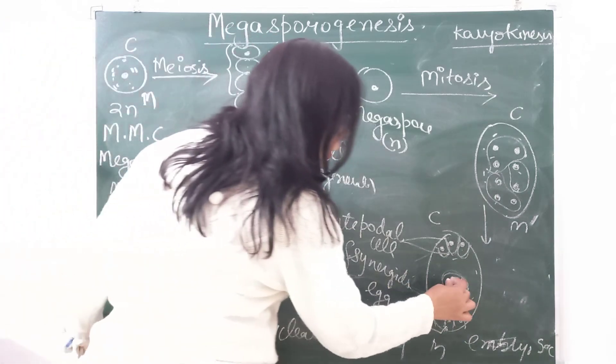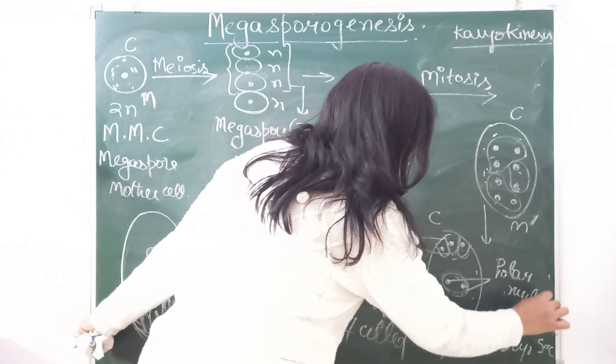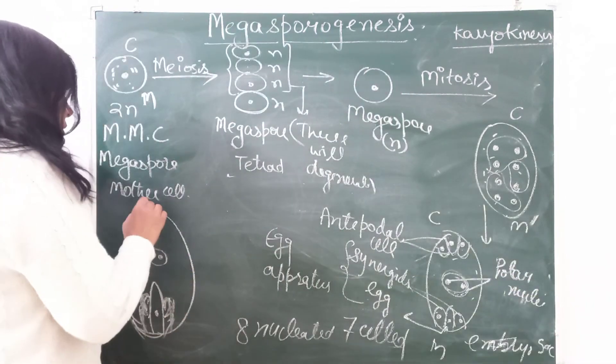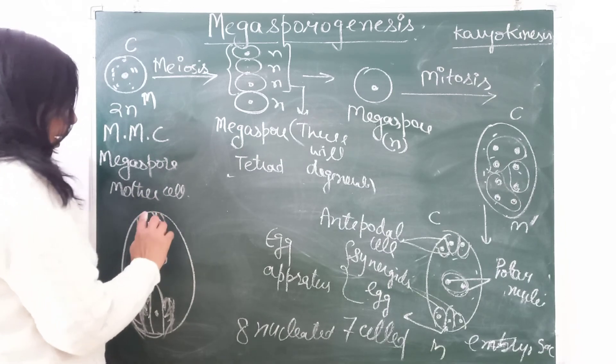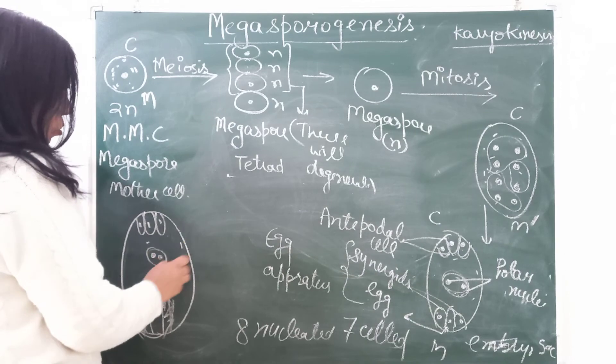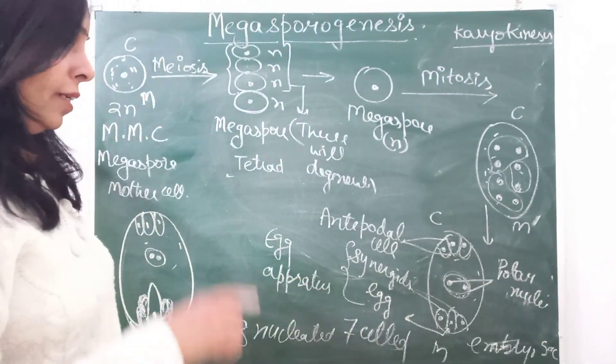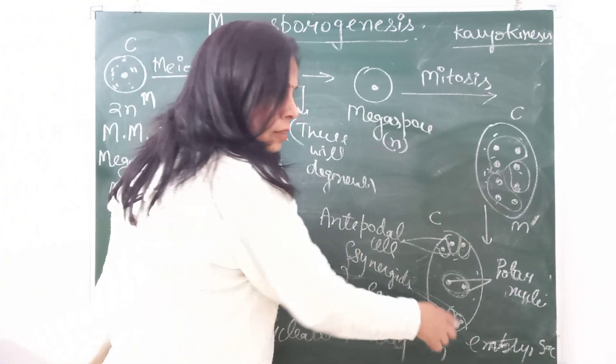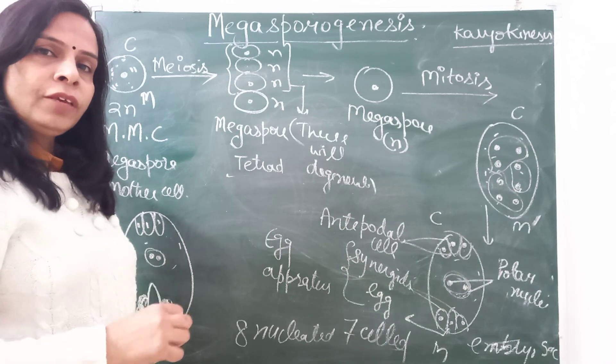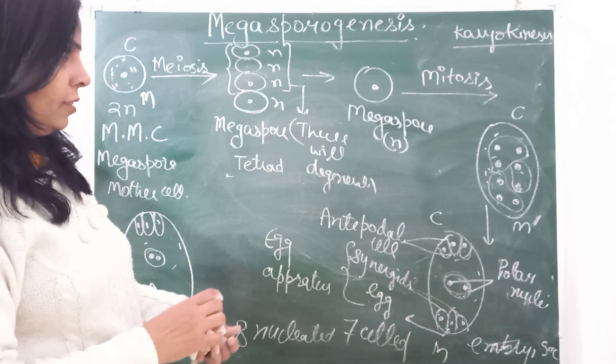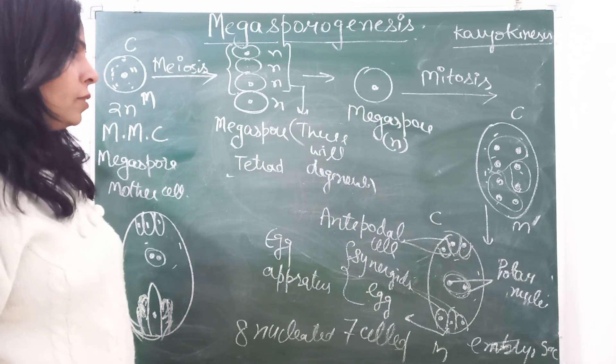These are the two polar nuclei, and there are three cells, these are antipodal cells. So this is the development of embryo sac. As this embryo sac is forming this egg, that is the female gamete, so embryo sac is also known as female gametophyte.